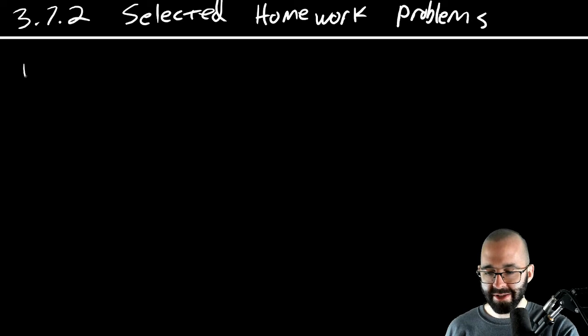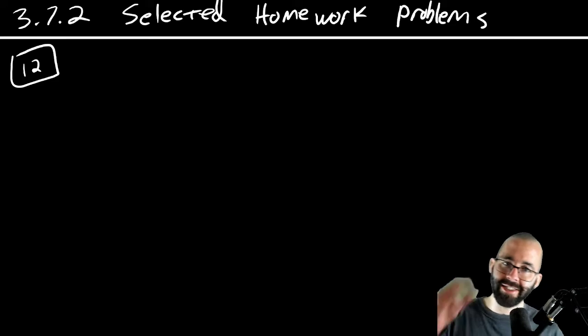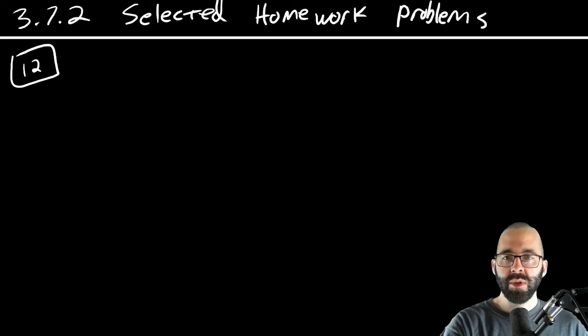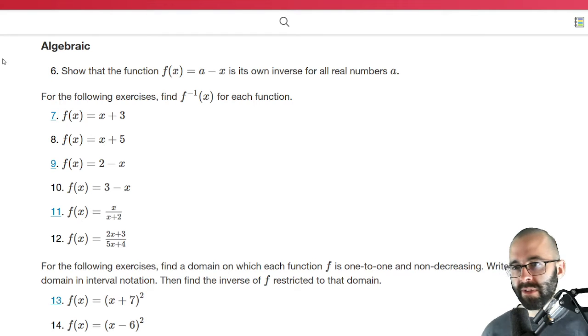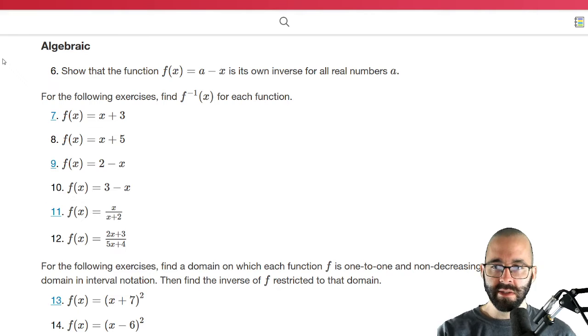We're going to start with number 12. We're going to do a lot on this video. Number 12 says find F inverse where F of X is two X plus three divided by five X plus four.